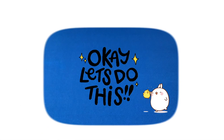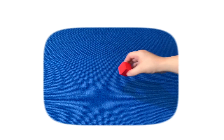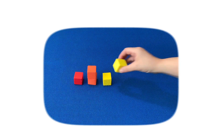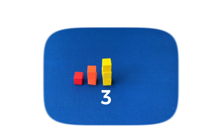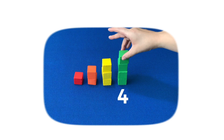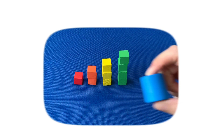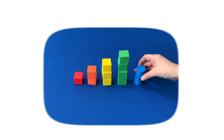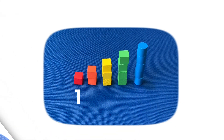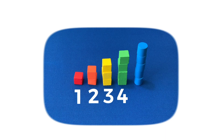Okay, let's do this. One. Two. Three. Four. This is a cylinder. Five. Let's count again: one, two, three, four, five.